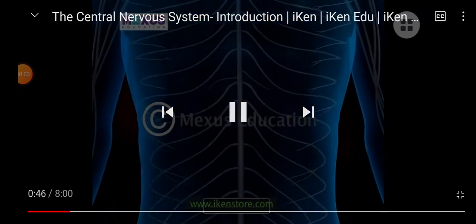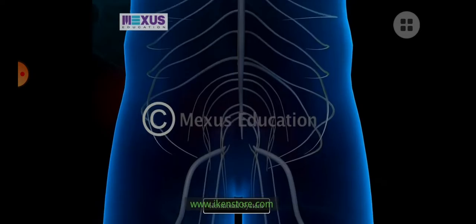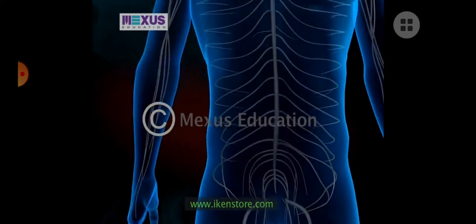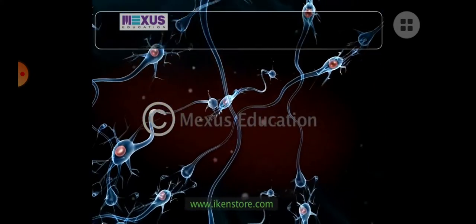In short, we'll understand the nervous system. Your entire nervous system is formed out of the basic structure called neurons.